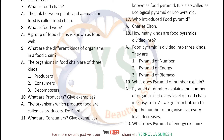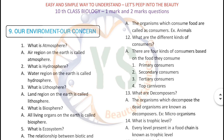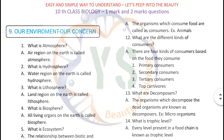What are producers? Give examples. The organisms which produce food are called producers. For example, plants, because they produce food in the process of photosynthesis. What are consumers? Give examples. The organisms which consume food are called consumers. For example, animals.